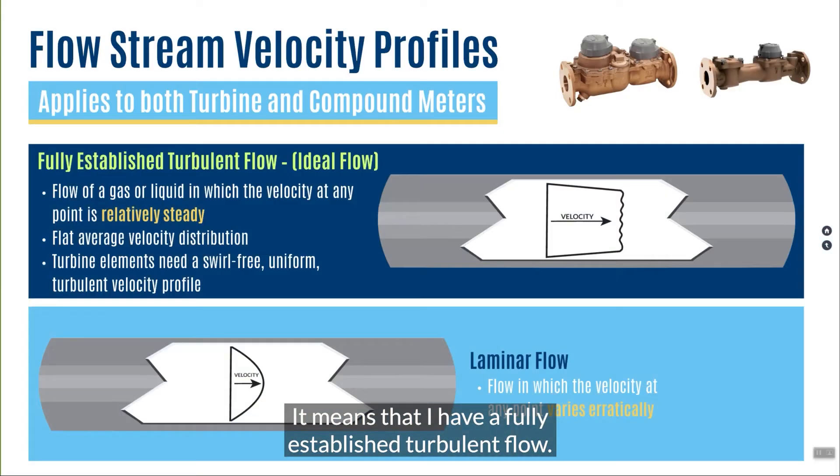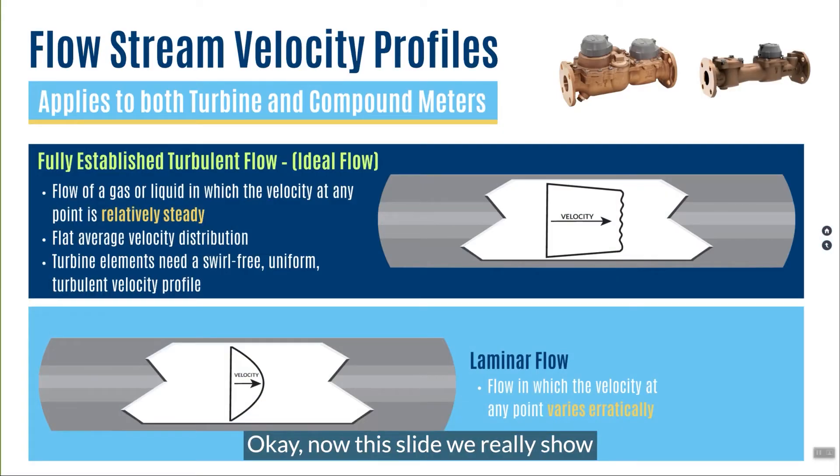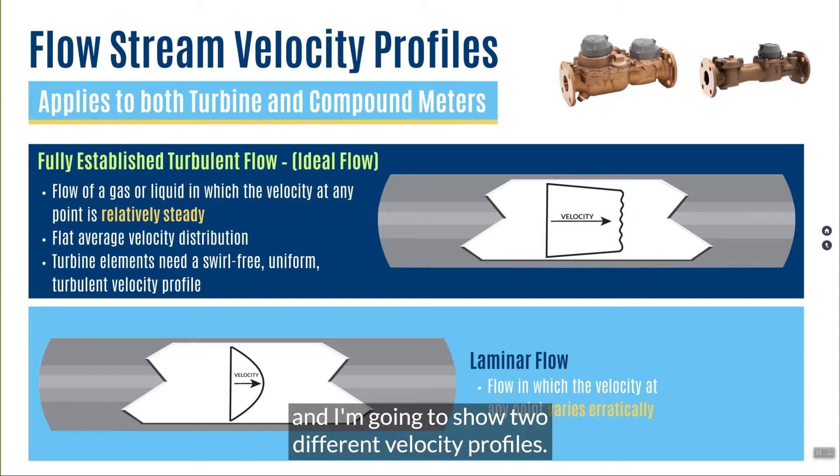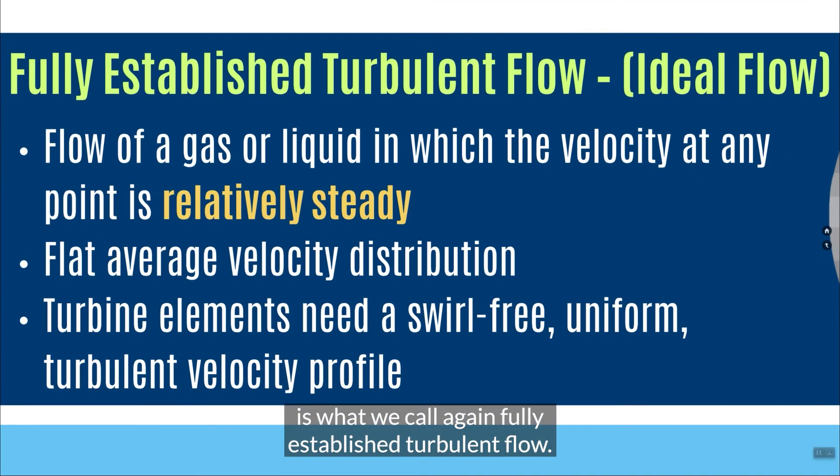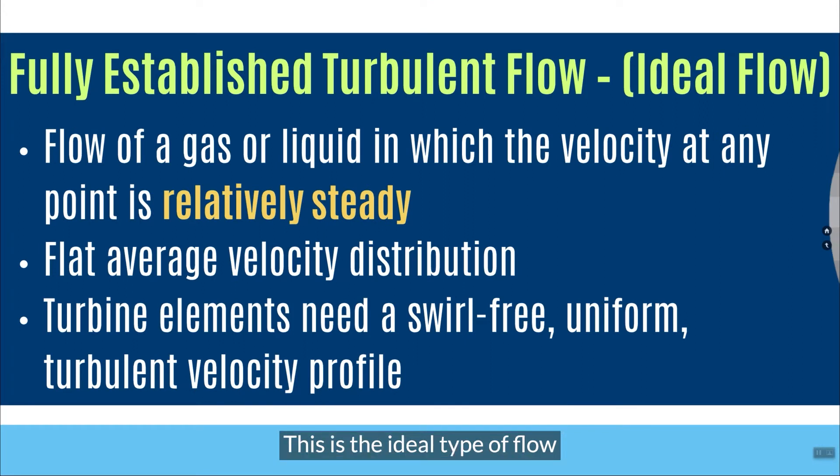What do I mean by that? It means that I have a fully established turbulent flow. Now, this slide, we really show two different pipes here, and I'm going to show two different velocity profiles. The first one that I'm going to talk about is what we call, again, fully established turbulent flow. This is the ideal type of flow for a turbine meter to operate correctly.